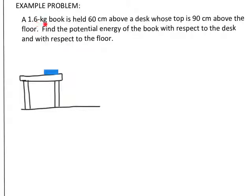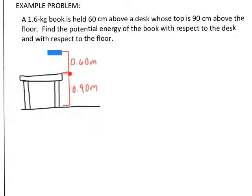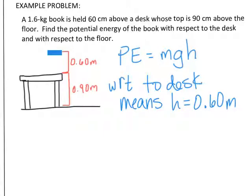We have a 1.6-kilogram book held 60 centimeters above a desk, and the desktop is 90 centimeters above the floor. I'm going to convert centimeters to meters for both of those. So we have the ground, the top of the desk 0.9 meters above the floor, and then the book another 0.6 meters above the desk. We want to find the potential energy with respect to the desk and with respect to the floor. With respect to the desk, the desk is the reference point and the book is only 0.6 meters above it, so let's plug in those numbers.